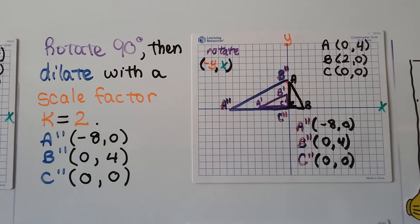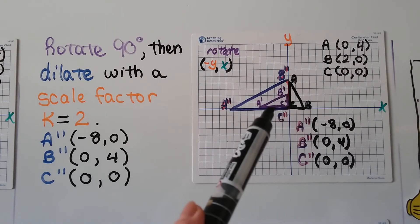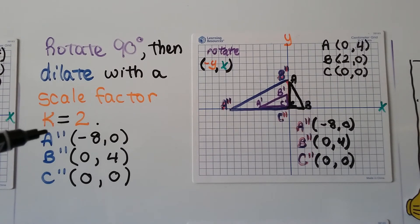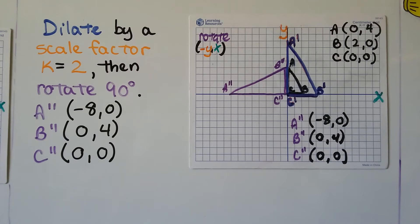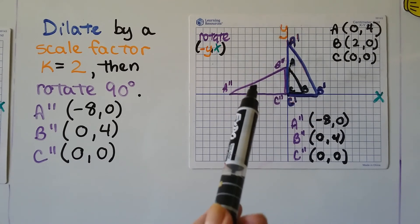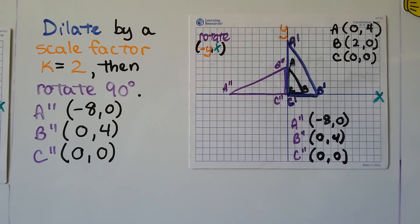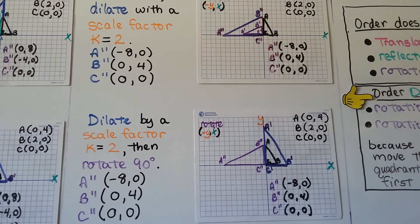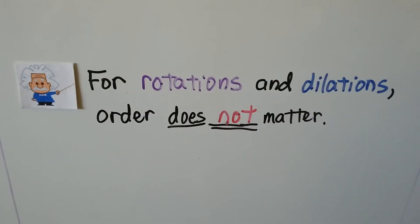What happens if we rotate 90 degrees and then dilate with a scale factor of 2? We start in quadrant 1 with our little black triangle, rotate it 90 degrees into quadrant 2 to get the purple one, then dilate with a scale factor of 2 to get the big blue triangle. Now if we do it the other way — dilate by scale factor 2 first to get the blue one, then rotate 90 degrees — we end up with the same ordered pairs in the same spot. Whether we rotated 90 degrees then dilated, or dilated then rotated, we get the same result. So for rotations and dilations, the order does not matter.